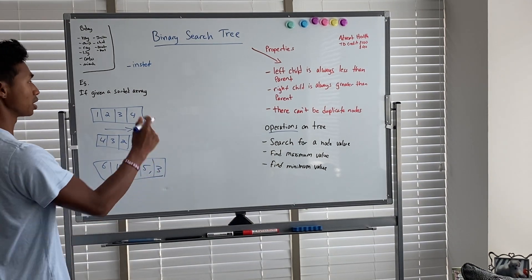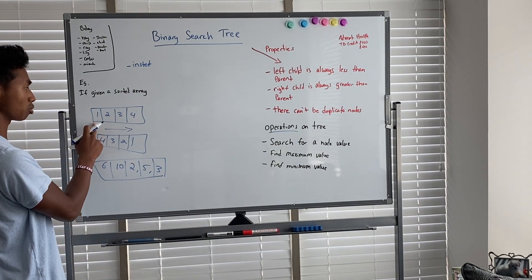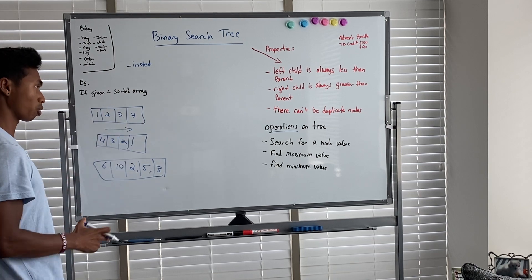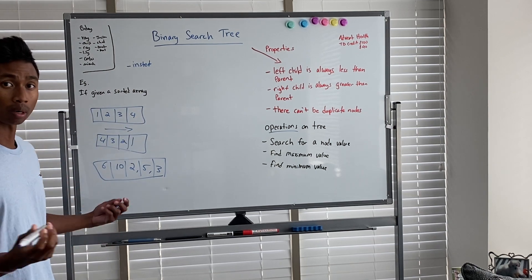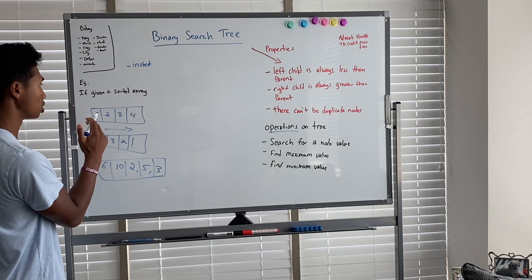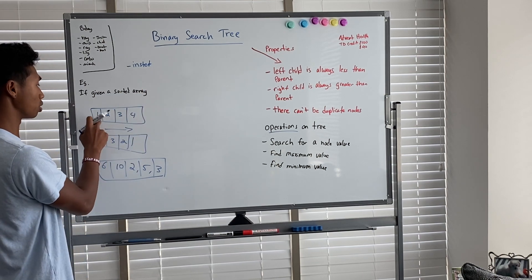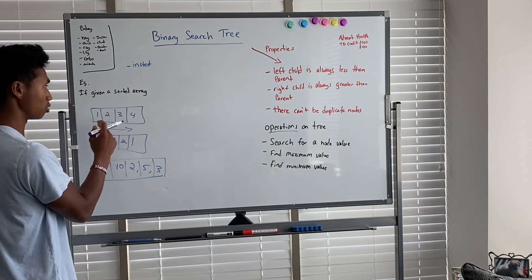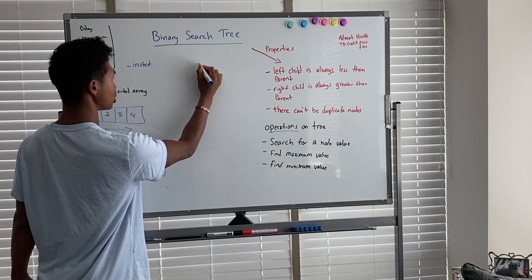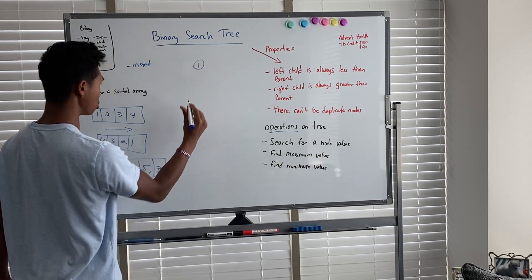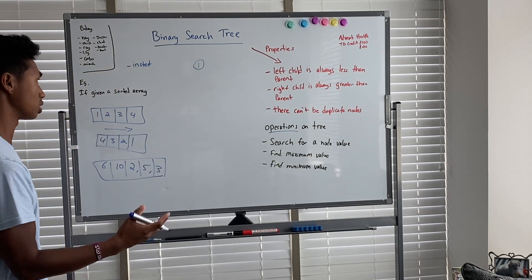They're pretty simple. So we're going to start with this one, the one, two, three, four array. So the first number that we would want to put into our binary search tree would be the value of one. Now because there's nothing there already, we would just create that as the root. The first one always goes as the root node.